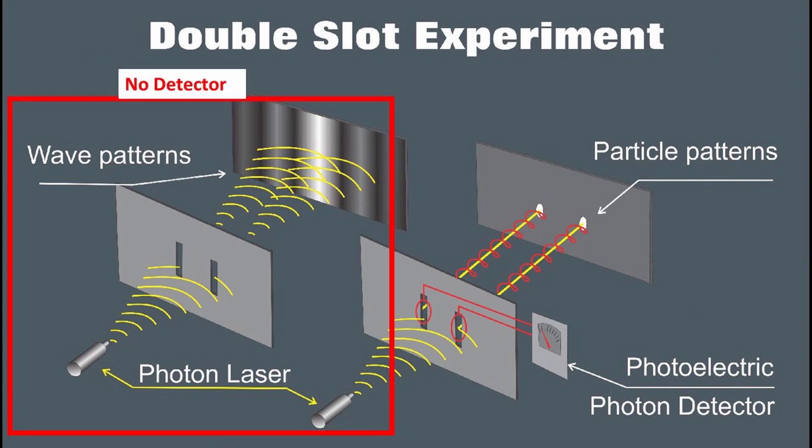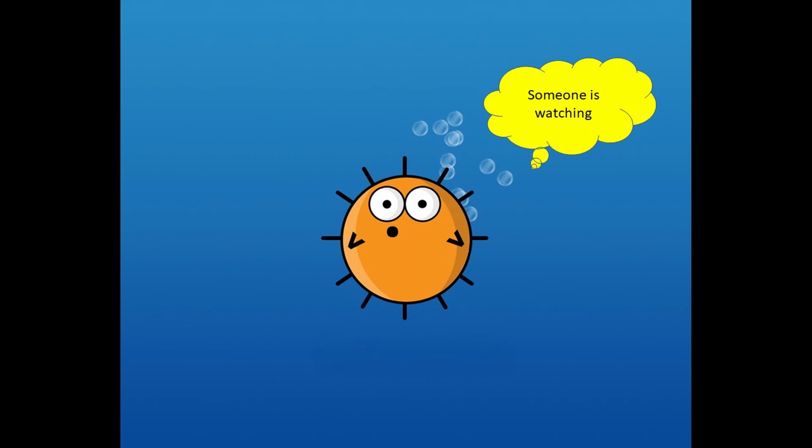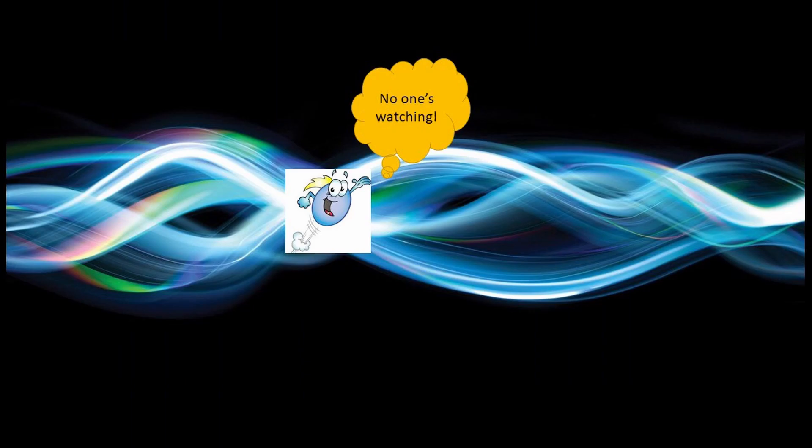However, once the detector was removed, the particles started behaving like waves again. It is as if the particle knew that someone was watching it and behaved like a particle. Once it knew no one was watching, it behaved like a wave — exactly like a child would behave when not supervised. How can this happen? Electrons are inanimate particles. How can they change their behavior one way when someone is observing them and another way when no one is watching?